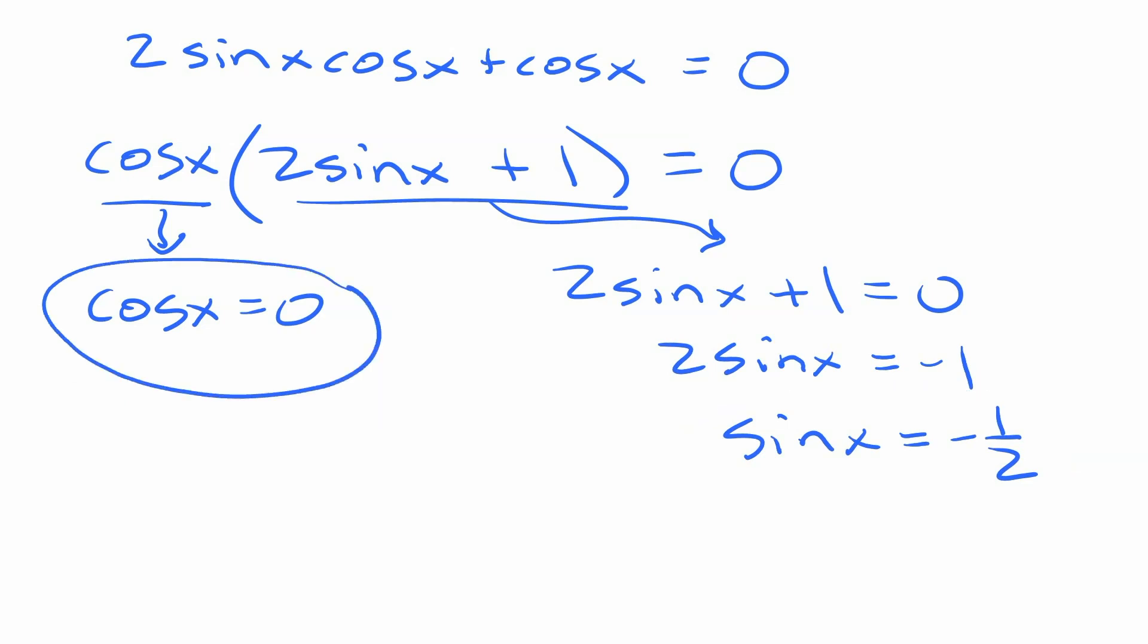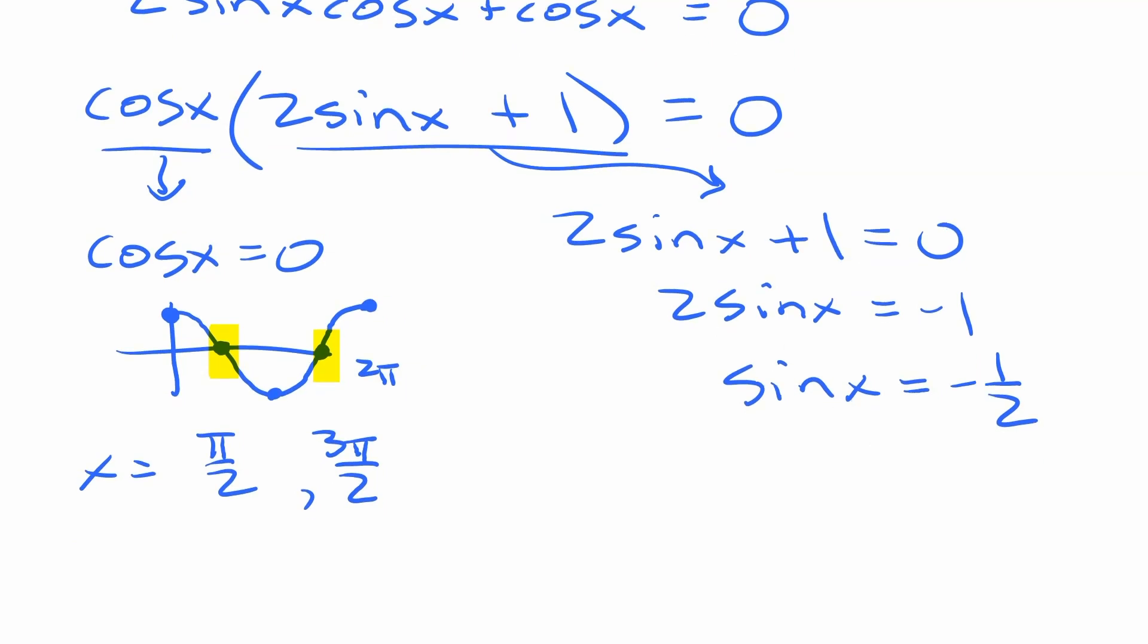The first one here, cos x equals 0, is another one where I would just think about the graph of cosine again. Cosine starts at 1, hits 0 at π over 2, hits negative 1 at π, hits 0 again at 3π over 2, and hits 1 at 2π. So the two values we're looking for are these two right here, that one and that one, which are π over 2 and 3π over 2. That's what x is from this equation, this part of this side.